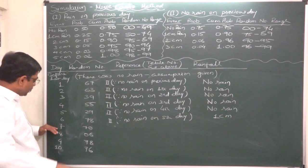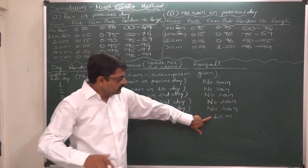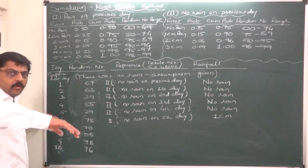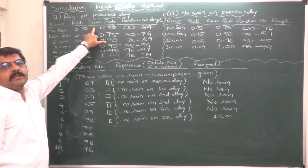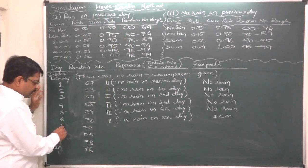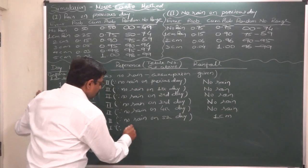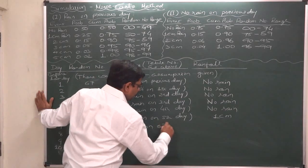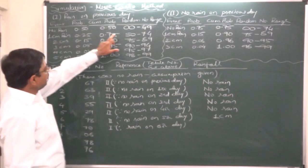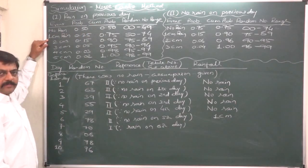For day 7, the situation has changed. The previous day (day 6) had predicted rain of 1 centimeter. So we must select distribution 1 (rain on previous day). Random number is 70, which falls in range 50–74, and that range suggests 1 centimeter of rain for day 7.